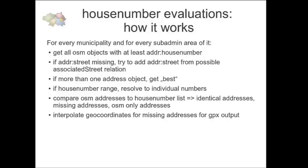If I have more than one address object, I take the best one with lowest priority: from point of interest, to building, to the entry of a building. If I have a house number range, I resolve it. For example in Cologne, they have an official house number 428, and so I have to treat that node or object as covering those three addresses within that range.